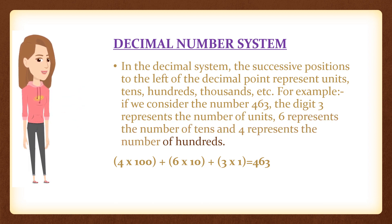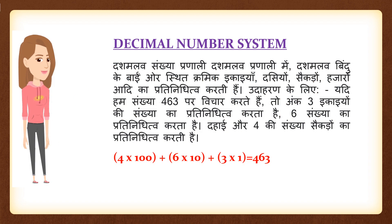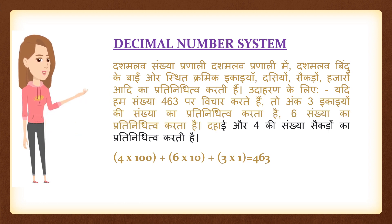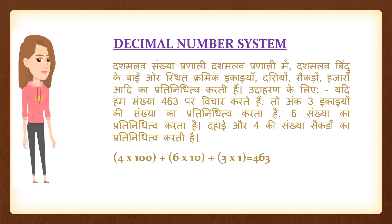Dashamlav sankhya pranali mein, dashamlav bindu ke bayi or sthit kramaik ikaiyaan, 10, sekadon, 1000, aadhi ka pratinidhitwa karti hai. Udaharan ke liye, yadi ham sankhya 463 par vichar karte hai, to ank 3 ikaiyong ki sankhya ka pratinidhitwa karta hai, 6 sankhya ka pratinidhitwa karta hai 10, aur 4 ki sankhya sekadon ka pratinidhitwa karta hai.